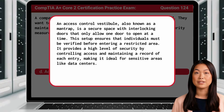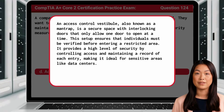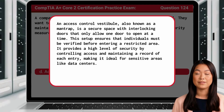An access control vestibule, also known as a man-trap, is a secure space with interlocking doors that only allow one door to open at a time. This setup ensures that individuals must be verified before entering a restricted area. It provides a high level of security by controlling access and maintaining a record of each entry, making it ideal for sensitive areas like data centers.